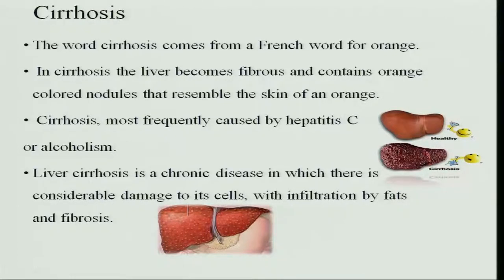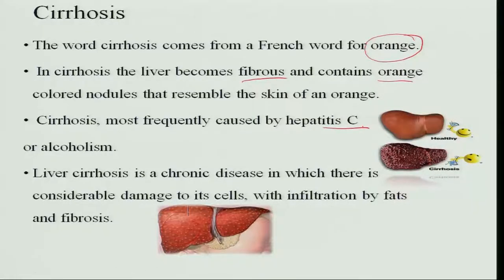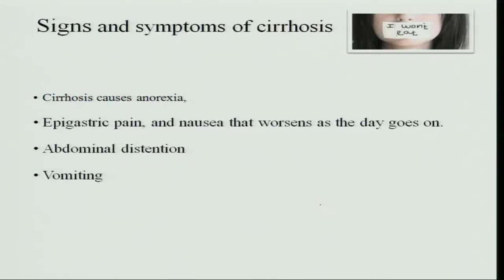Cirrhosis is a type of liver disorder. It comes from the French word for orange — the liver becomes fibrous and contains orange-colored nodules, resembling the skin of an orange. It is caused mainly by the hepatitis C virus and excessive alcoholism. This is a chronic disease where there is considerable damage to the liver and infiltration of fat — the liver cells are filled with fat and the liver becomes hard, forming a fibrous mass. It causes anorexia, pain in the epigastric region, nausea, abdominal distension, and vomiting.